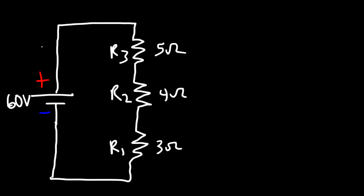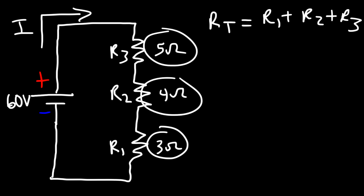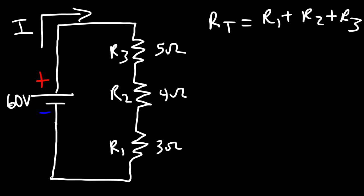So what is the current flowing in a circuit? In order to find the current flowing in a circuit where the resistors are connected in series, you need to find the total resistance. The total resistance is going to be R1 plus R2 plus R3. You just need to add the values of the three resistors. So 3 plus 4 plus 5, that's going to give us 12, so the total resistance in the circuit is 12 ohms.